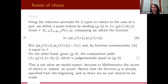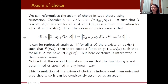This is not what we would expect — we don't want an axiom of choice that is always true; we want to treat it as an axiom. Also notice that the function g is specified from the very beginning, so there is no real choice to be made. We therefore formulate the axiom of choice in type theory using truncation.